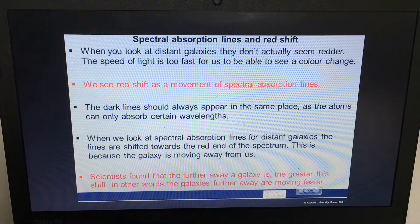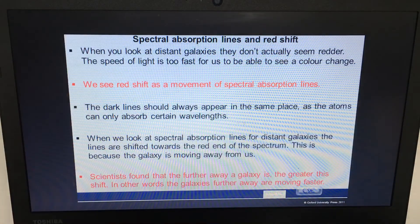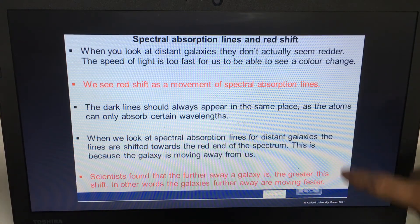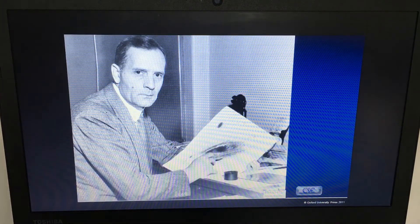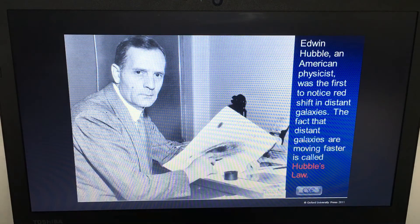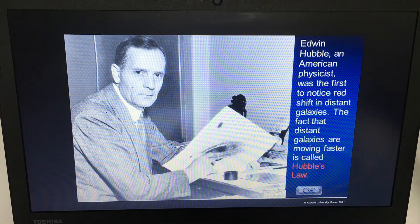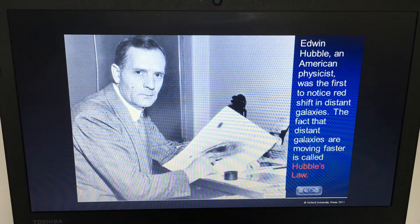Scientists found that the further away a galaxy is, the greater the shift — in other words, galaxies further away are moving faster. They all started from one initial point. This is where the embarrassed analogy fits: the more redshift, the faster the galaxy must be moving. Edwin Hubble was the first to notice this redshift in distant galaxies, and the fact that distant galaxies are moving faster is called Hubble's Law.